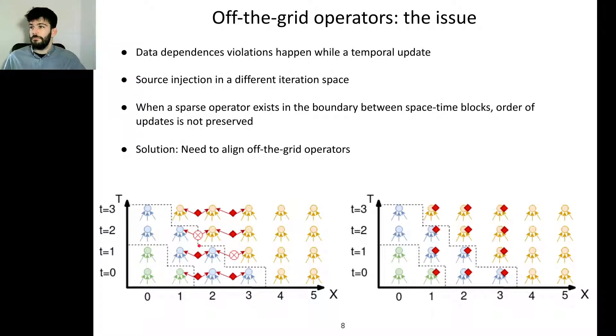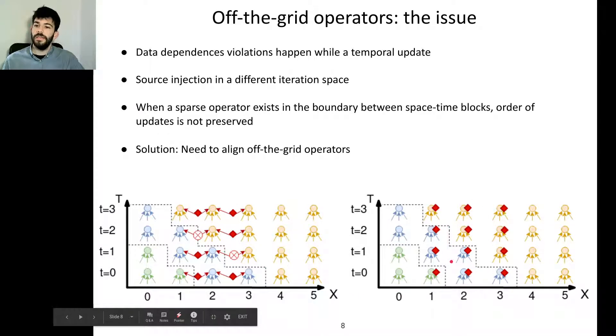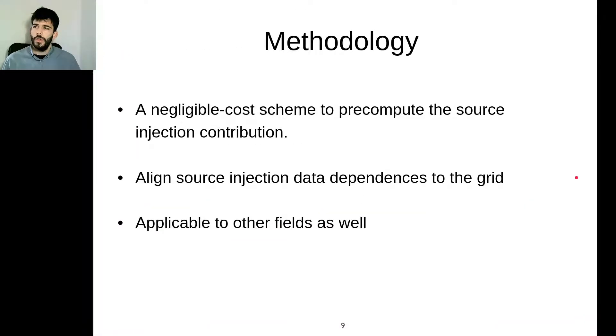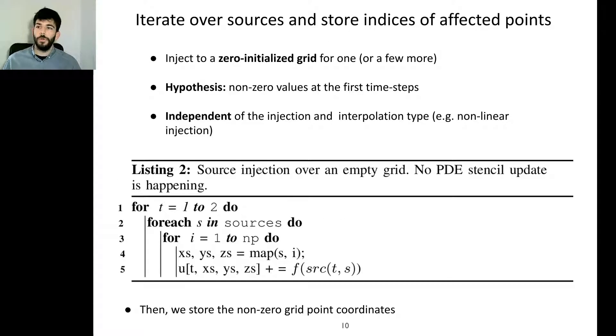The way to solve this problem is to align these sparse off-the-grid operators to the grid points where there are no data dependency vectors crossing space-time boundaries. We developed a negligible cost scheme that pre-computes the source injection contribution and is able to align the data dependencies of the sparse operators to the grid points. This technique is applicable to other fields as well, however our proof of concept will only use seismic imaging wave propagation kernels.